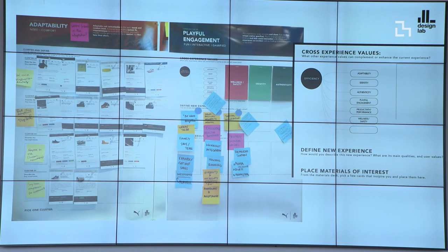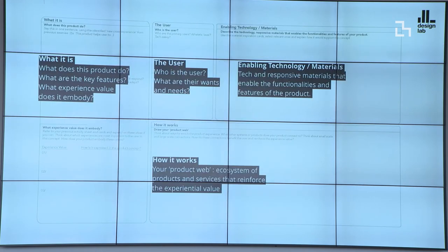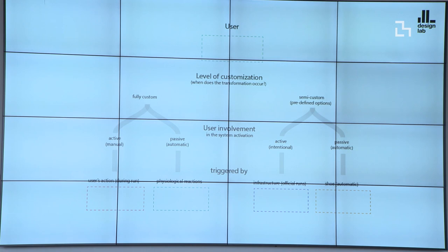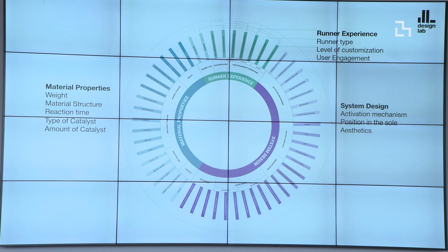Within framing the ideation, it's about crossing values — can we come up with a new experience value by crossing adaptability with a gamified fun experience and vice versa? Looking through all aspects: what does it do, who is the user, what is it doing for the user, what are the enabling technologies, how does it work, is it a standalone product or can we think about an ecosystem of product experiences with digital and physical? And from seed concepts to the full experience, going in depth into each level — identifying the level of customization, how much involvement is required from the user, what triggers it, whether it's a physiological response or user's action.